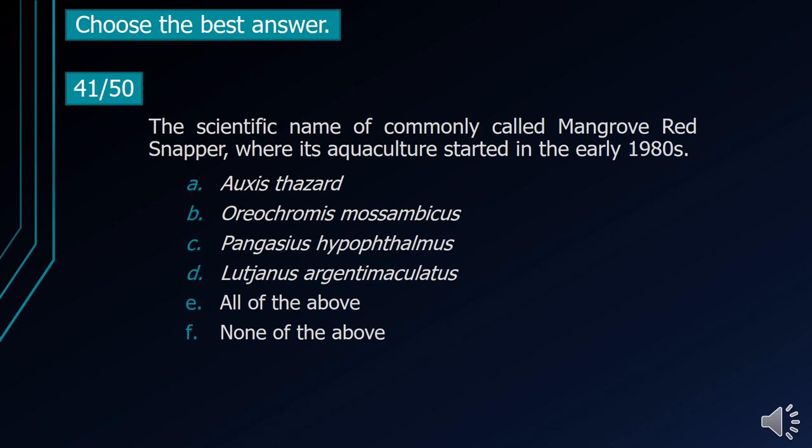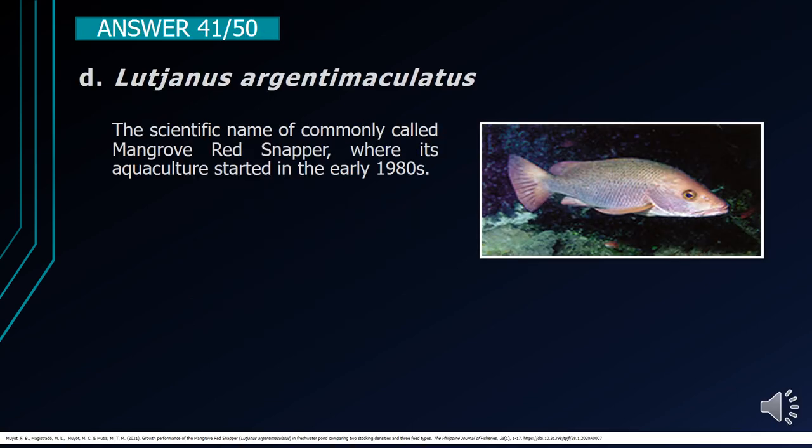Number 41. The scientific name of the commonly called mangrove red snapper, whose aquaculture started in the early 1980s. A. Auxis thazard. B. Oreochromis mossambicus. C. Pangasius hypophthalmus. D. Lutjanus argentimaculatus. E. All of the above. F. None of the above. The correct answer is letter D, Lutjanus argentimaculatus. It is the scientific name of the mangrove red snapper, whose aquaculture started in the early 1980s.